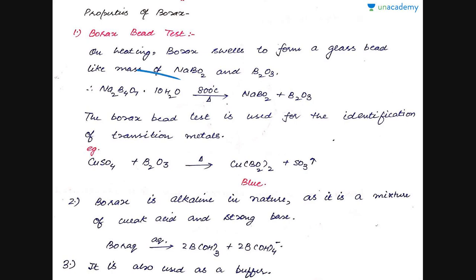It consists of sodium borite and boron trioxide. Borax on heating at very high temperature around 800 or 850 degrees centigrade gives NaBO2, that is sodium borite, plus boron trioxide.